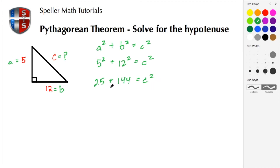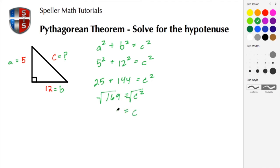25 plus 144 is 169, and that is equal to c squared. We don't want c squared — we want c — so we need to take the square root of both sides. We know that 169 is a perfect square, and the square root of 169 is 13.